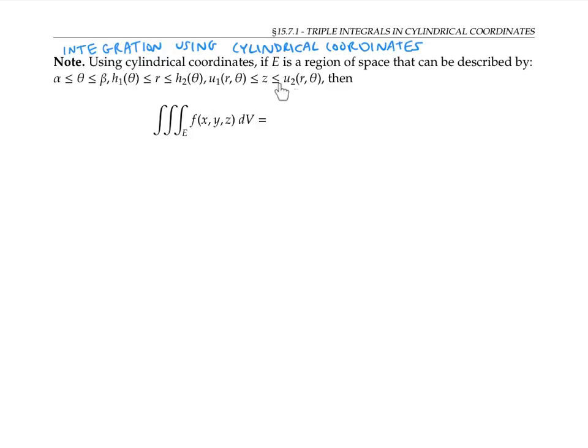...then we can integrate a function with respect to volume using cylindrical coordinates by doing an iterated integral. Theta goes between alpha and beta, r goes between its functions of theta, and z goes between its functions of r and theta.